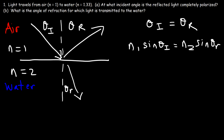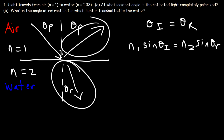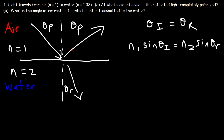For most incident angles the reflected ray is only partially polarized. However, there is a specific incident angle where the reflected ray is completely polarized — our goal is to calculate that angle. That angle is known as the polarizing angle, theta_p. Since the angle of incidence equals the angle of reflection, we can call both of these theta_p. At the polarizing angle, the reflected ray and refracted ray are at right angles — 90 degrees with respect to each other. Since a straight line is 180 degrees, 180 minus 90 means these two angles are complementary and add up to 90.